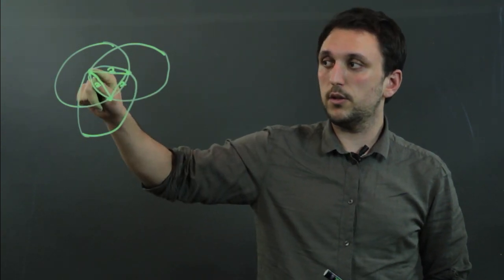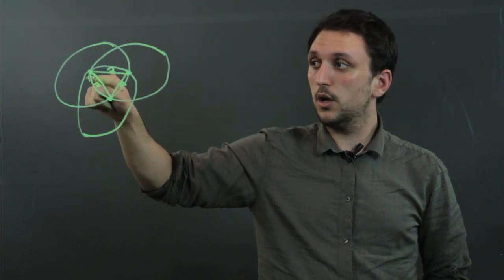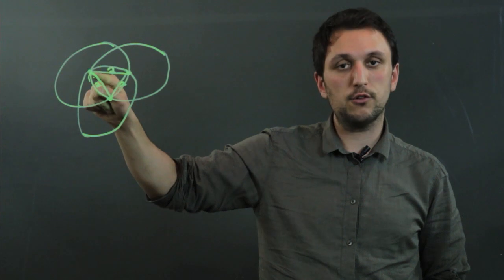A Reuleaux triangle is basically the shared space of three circles, each of whose center is tangent to the other circle.